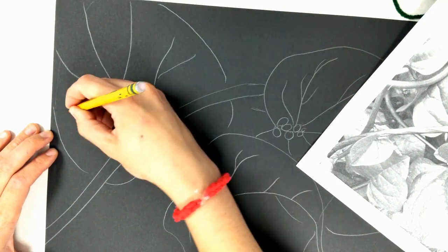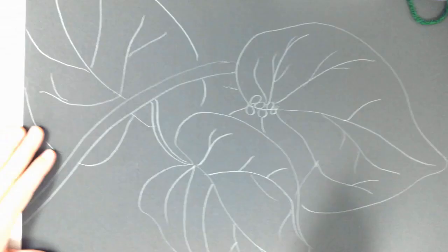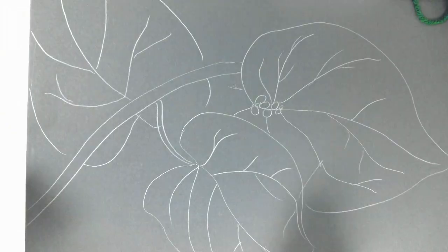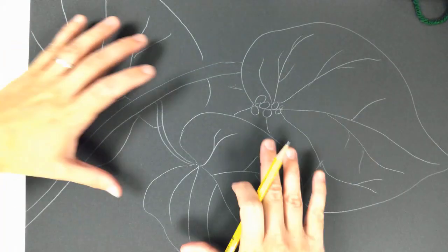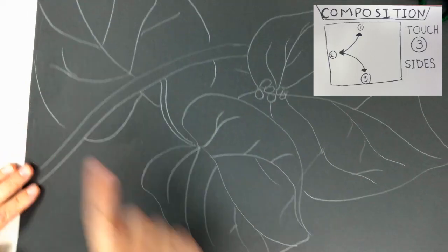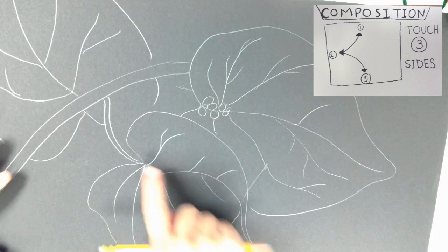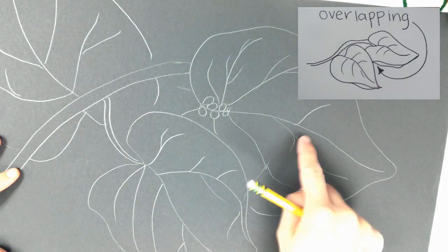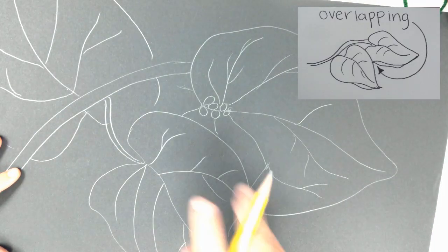So when you're done you're going to show Miss Fitzgerald to get checked off and what I'm looking for is does your composition touch three sides and do you have overlapping. So let's check one, two, three sides have been touched and the leaves are overlapping. So then this one is good to go for the next step.